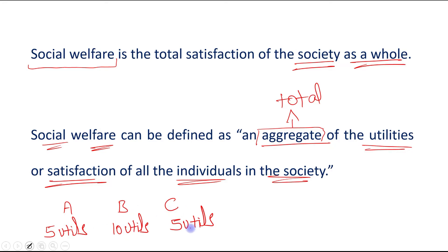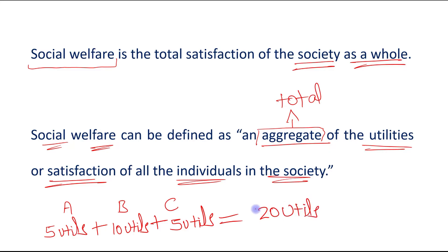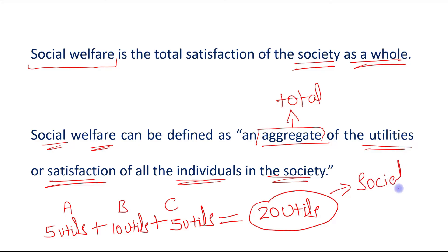When we total the satisfaction of all three individuals — A gets five utils, B gets ten utils, and C gets five utils — the total is 20 utils. This 20 utils represents social welfare, the welfare of the society.